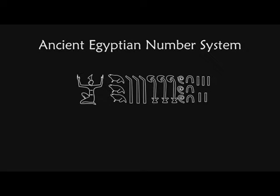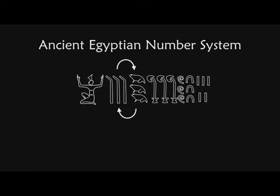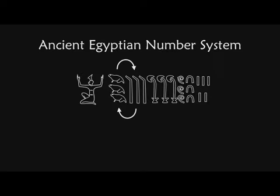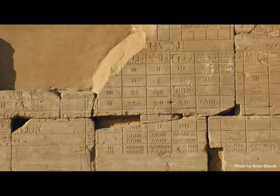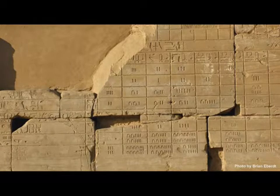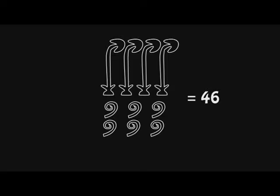One of the interesting things about the Egyptian number system, if you're a teacher, is that if your student mixes up that tadpoles are worth 100,000 and should go to the left of the bent finger, which is worth 10,000, but they mix that up — well, you still know what their number is, so you can correct them. The Egyptian number system is commutative; it doesn't matter the order of the numbers. In fact, you can go to the temple at Karnak and see that the numbers are just put in boxes. Here's an example: this is 4,622. The number is written vertically, but we still know what it means.